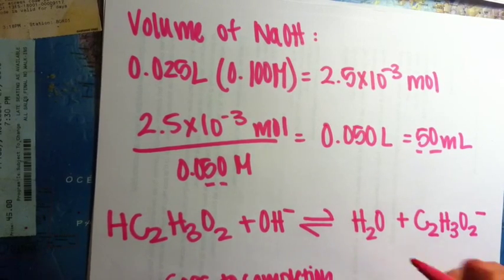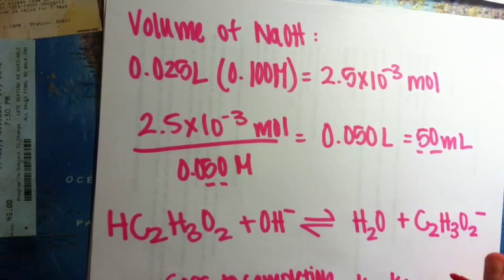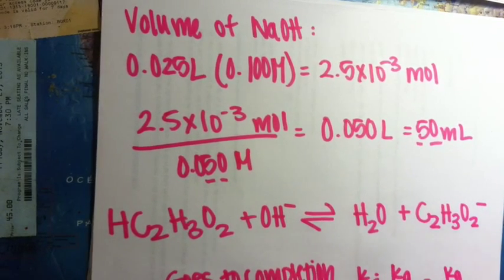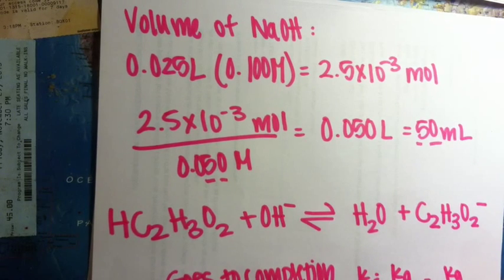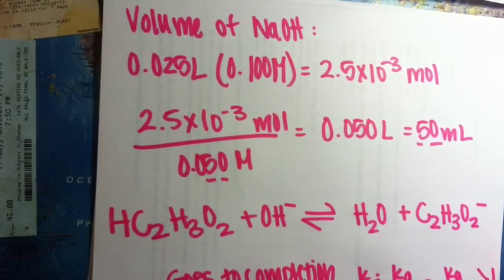Since K is equal to Ka over Kw, where Ka is bigger than Kw and is divided by 10 to the negative 14th, this will be bigger than 1, confirming the reaction goes to completion.